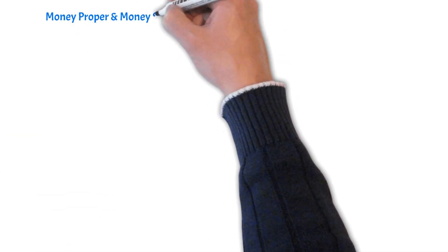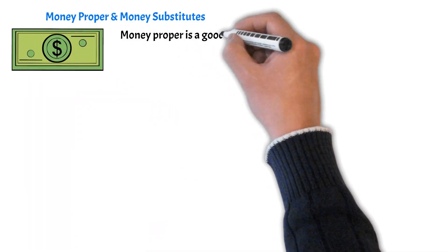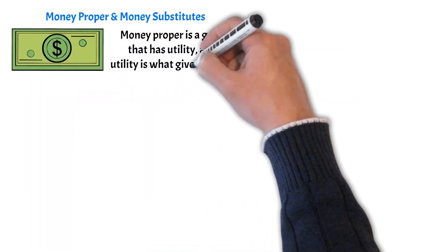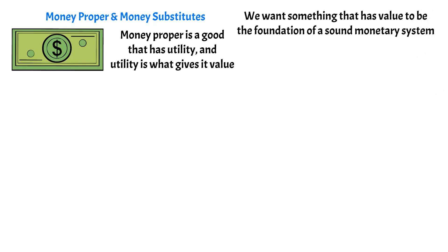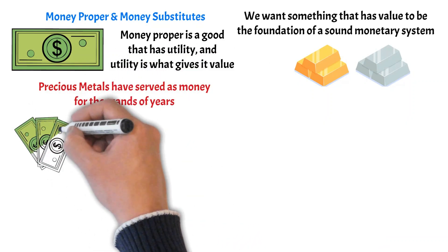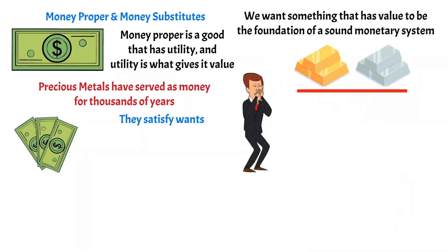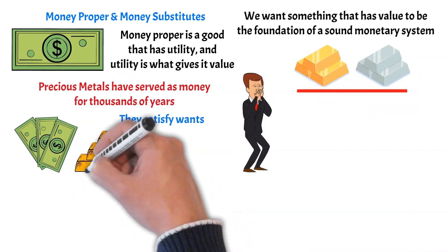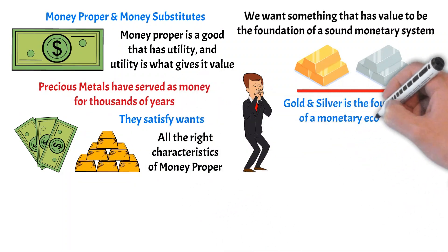This leads us to the concept of money proper and money substitutes — the two types of money. Money proper is a good that has utility, and utility is what gives it value. We want something that has value to be the foundation of a sound monetary system. Gold and silver serve as base money because they satisfy wants, are scarce, durable, divisible, and fungible. That is what gives precious metals — and in particular gold — a monetary value, and why they are used as the foundation of a monetary economy.